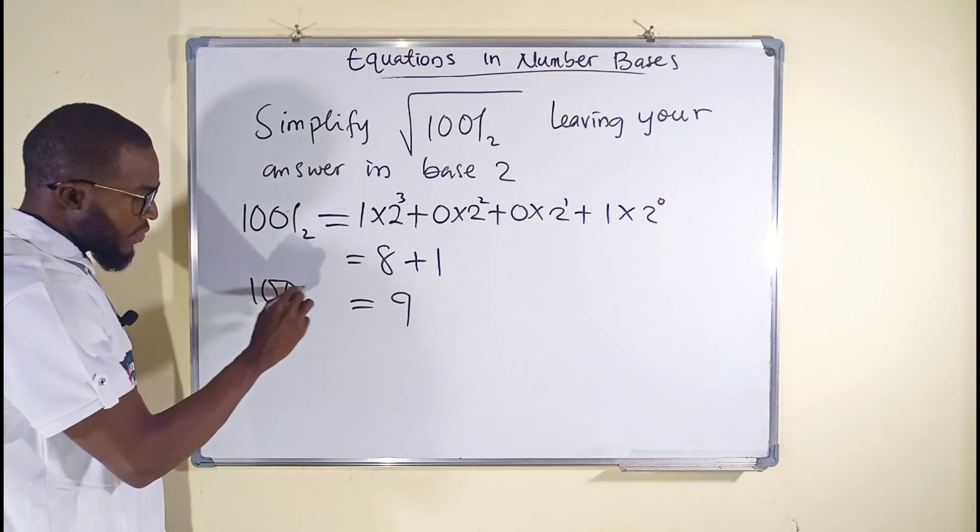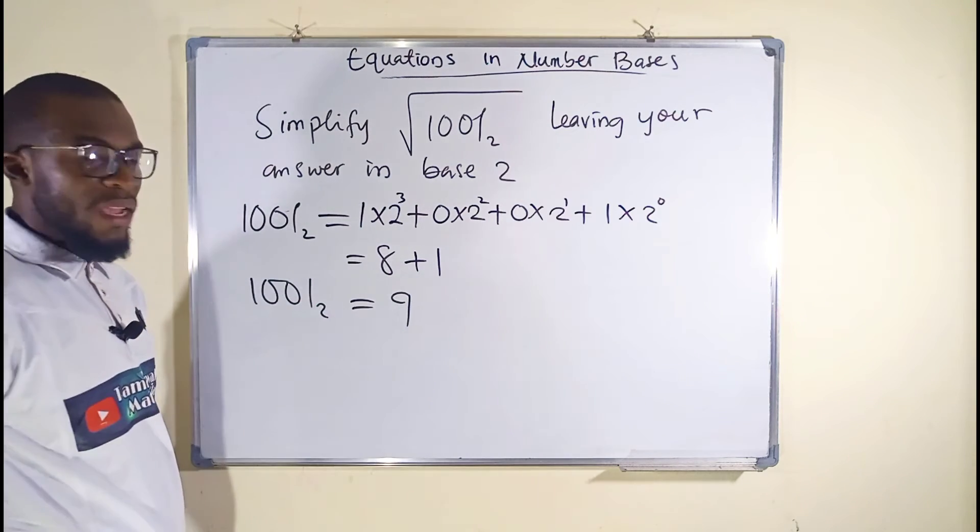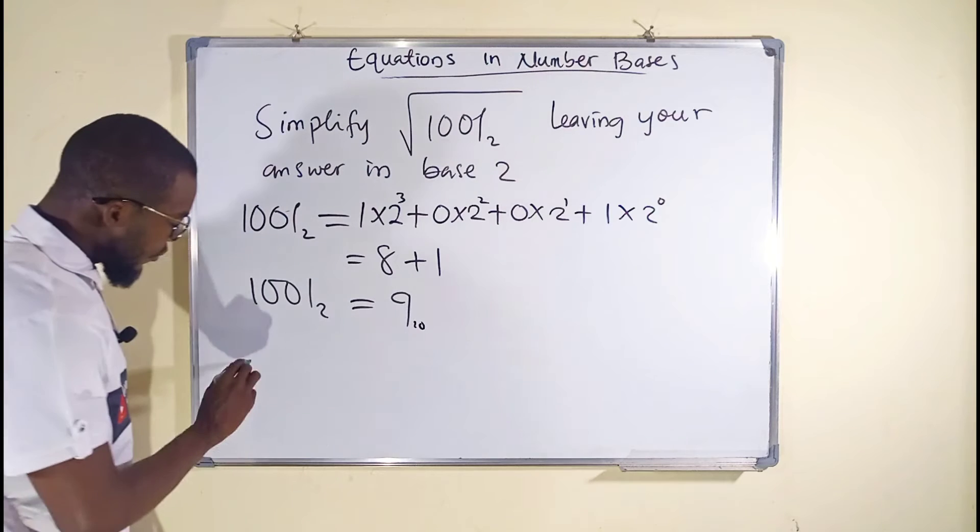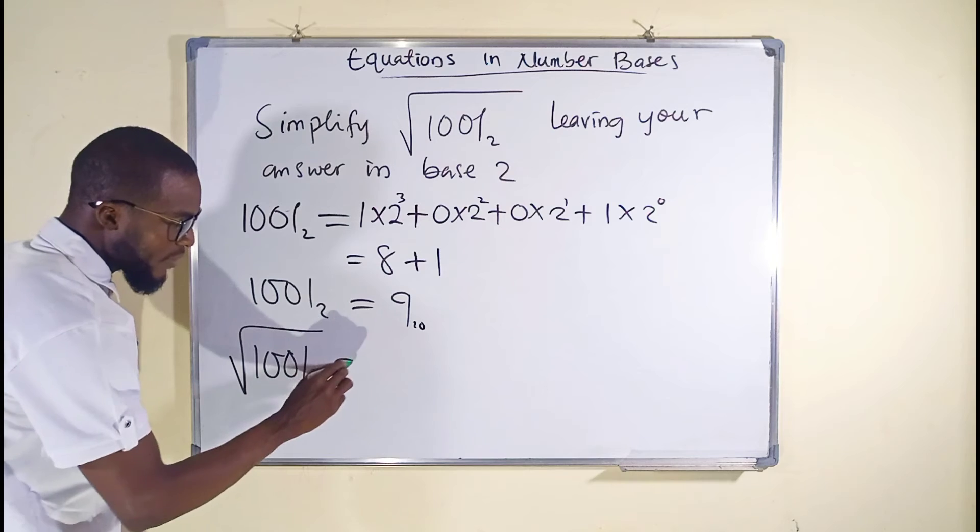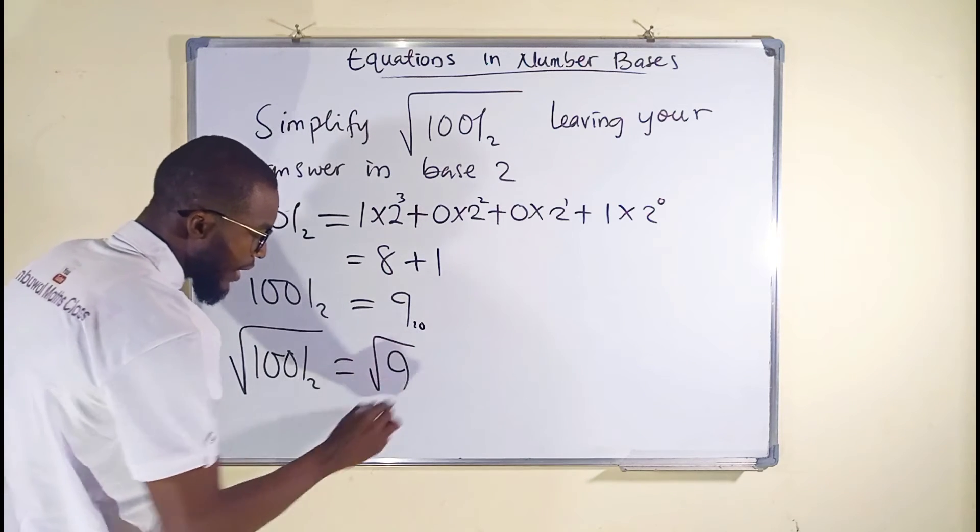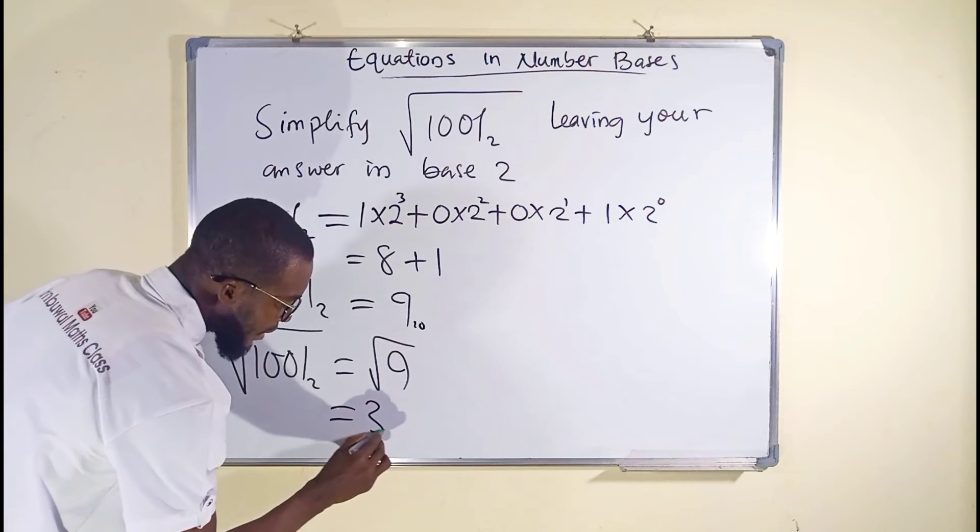So 1001 in base 2 is the same thing as 9 in base 10. So we can say square root of 1001 in base 2 is the same thing as square root of 9, which is equal to 3 in base 10.